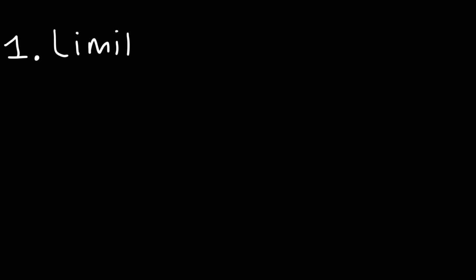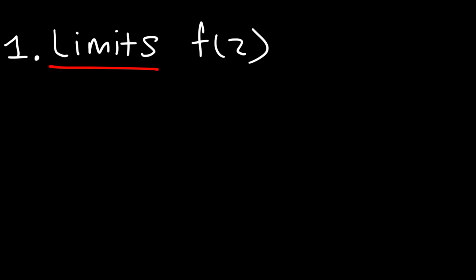The first one is limits. Limits help you to evaluate a function. Let's say if we want to evaluate f when x is equal to 2, but for some reason a function is undefined or we just can't do it. A limit will allow you to see what happens as x approaches 2. Limits are very useful to find out what happens to a function as we approach a certain value.